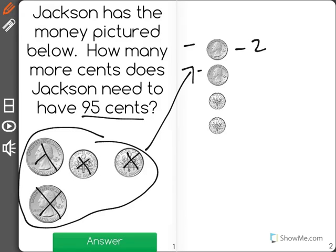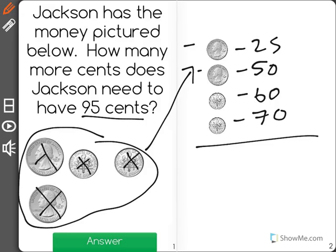Now, one quarter is 25, another quarter would make 50, and then we have 10 cents for each of the dimes. So 60, right now we have 70 cents. In order to get to 95 cents,